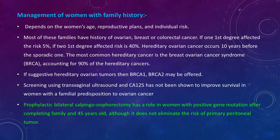If there is a suggestive hereditary ovarian tumor with one or more first-degree relatives affected, we perform BRCA1 and BRCA2 gene studies for the family. Screening using transvaginal ultrasound and tumor markers like CA-125 has not been shown to improve survival in women with familial predisposition to ovarian cancer — there is no established role for ovarian cancer screening, unlike breast cancer with mammography or cervical cancer with Pap smear.